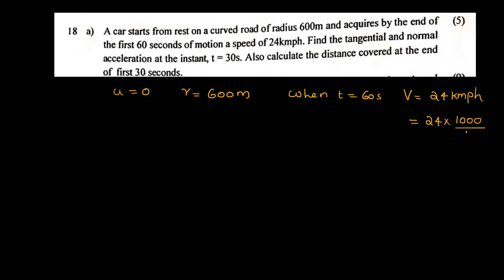The radius is equal to 600m. When t equals 60 seconds, the speed is 24 km per hour. So the final velocity is 24 km per hour, which we convert: 24 multiplied by 1000 divided by 3600, giving us 6.67 metres per second.